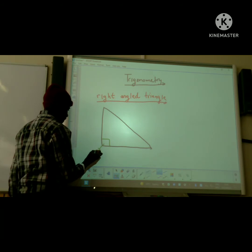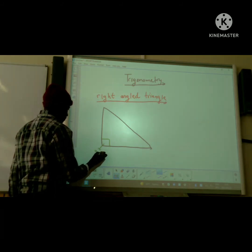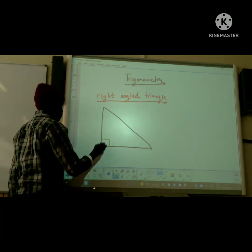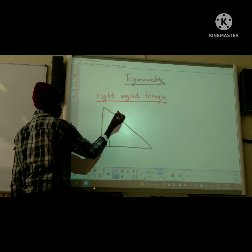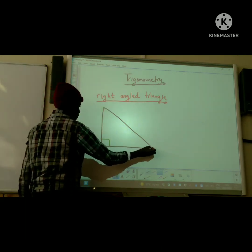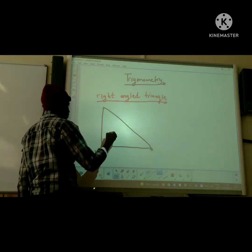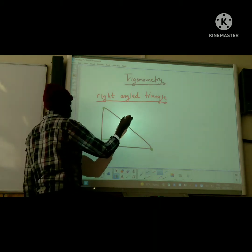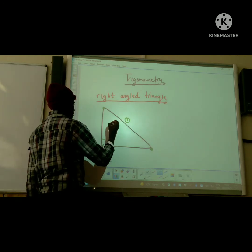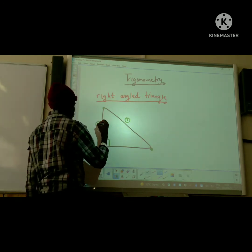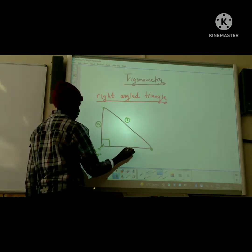It means one angle there equals 90 degrees, and it's got three vertices. By vertices, I mean those corners, those points that are joined by those lines. This is a basic triangle with side one over there, side two, and side three.